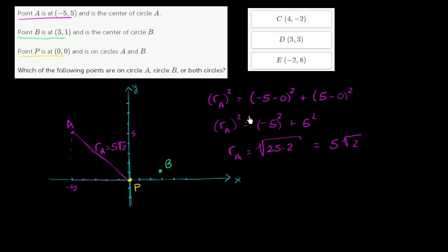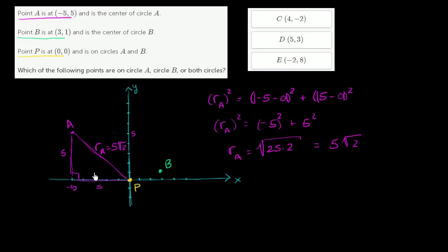This is just the same thing as the Pythagorean theorem. If we construct a right triangle, one leg is the absolute value of negative 5 minus 0, which is 5, and the other leg is the distance between 0 and 5 in the y direction, which is also 5. The Pythagorean theorem tells us 5 squared plus 5 squared equals the hypotenuse squared — and that's exactly what we have here. You might wonder about the negative 5 squared versus positive 5: when you square it, the negative disappears, so the sign doesn't matter. Either way, we've figured out this radius.